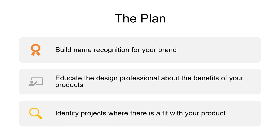The things you need to do are: build name recognition for your brand, educate the design professional not just about product benefits but by doing lunch-and-learns or online continuing education about your applications, and identify projects through services like CMD, BIM objects, and direct architect visits. Ultimately you get into office master specifications when they accept your product. Looking at those three things it seems simple, but it's how you implement them that's the bottom line.